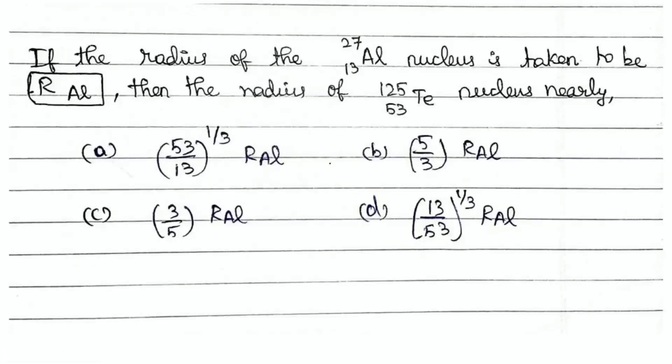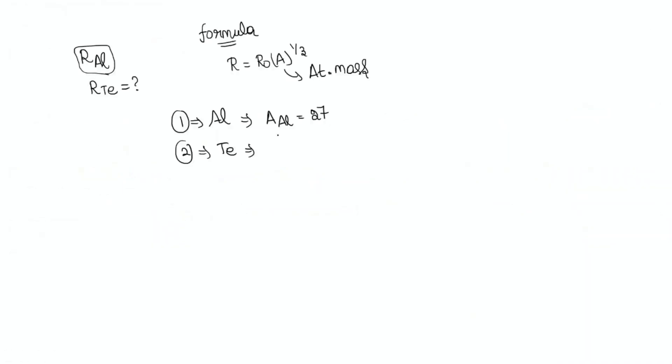And then, now tell me, what is the atomic mass of tellurium in this question? Tellurium, 125. Exactly. So, atomic mass of tellurium is 125. I am going to use these two points.